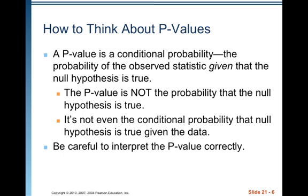A p-value is a conditional probability — the probability of the observed statistic given that the null hypothesis is true. The p-value is not the probability that the null hypothesis is true, and it's not even the conditional probability that the null hypothesis is true given the data. So be careful to interpret the p-value correctly.